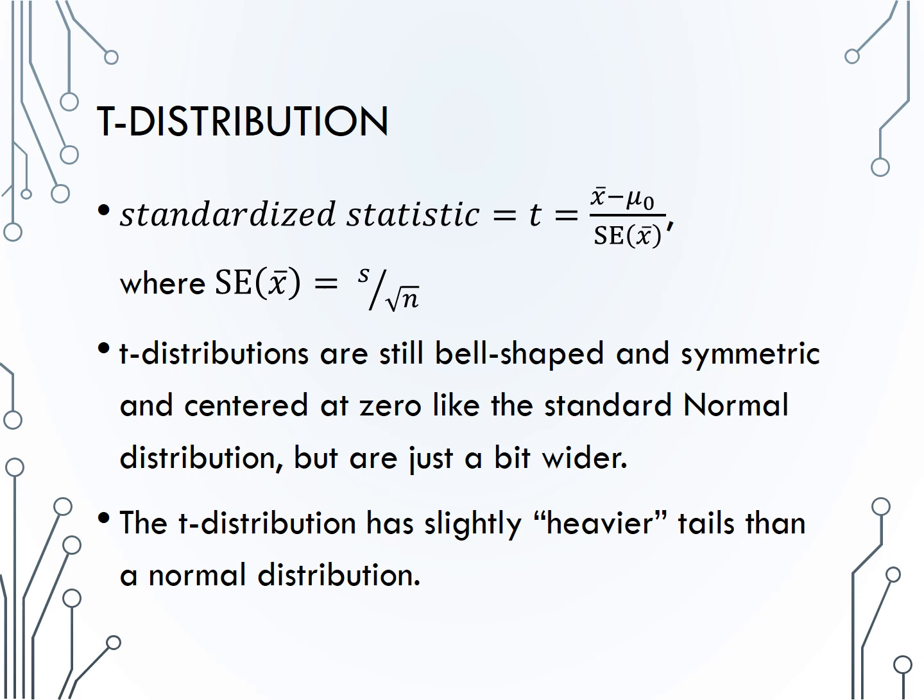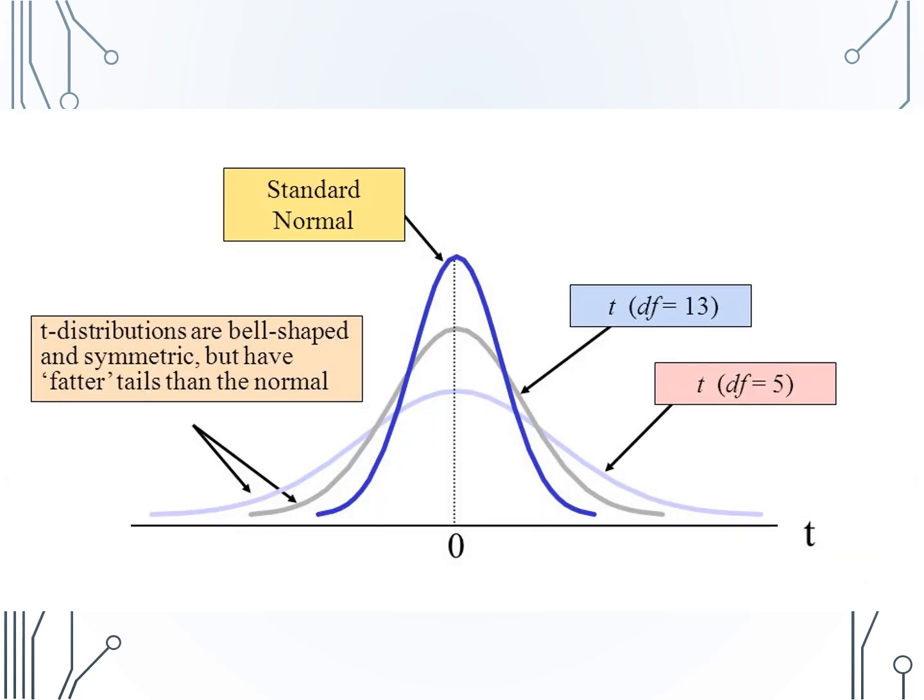Now, since we have used s instead of sigma, there is a bit more uncertainty in our resulting distribution. We will use a t-distribution instead of the standard normal. The t-distribution is very like the standard normal distribution. It's still bell-shaped, symmetric, and centered at zero, but it's just a bit wider to account for this additional uncertainty. Here are a comparison of the standard normal distribution in dark blue, and two different t-distributions. The df in the picture stands for degrees of freedom, which is found by subtracting one from the sample size. You do not need to worry about degrees of freedom for stat 216, but do note that as the degrees of freedom increases, or as we have a larger sample size, the t-distribution becomes narrower and closer to the standard normal.